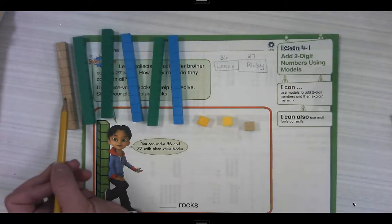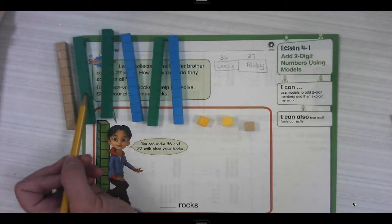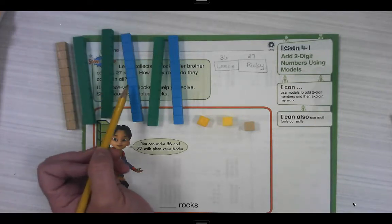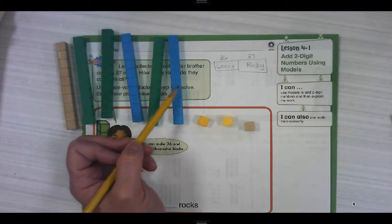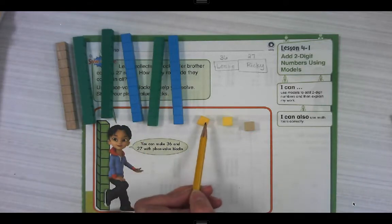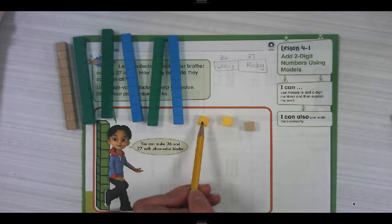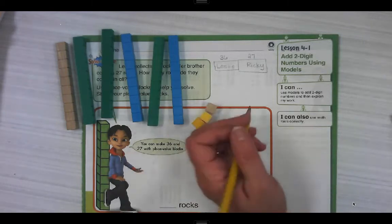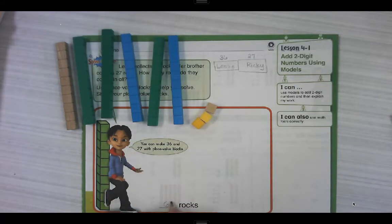I'm going to put it over there with the other 10s. Let's count it: 10, 20, count with me, 30, 40, 50, 60. Counting by ones now: 61, 62, 63. So I got 63 rocks.